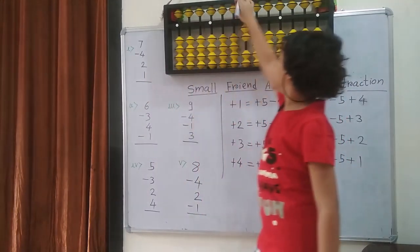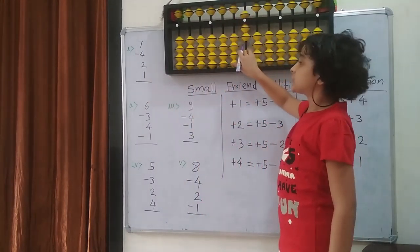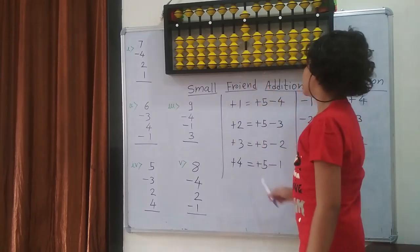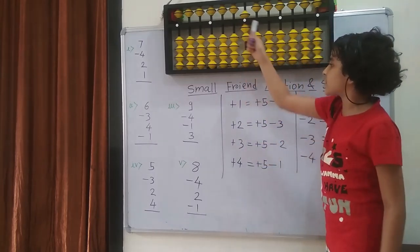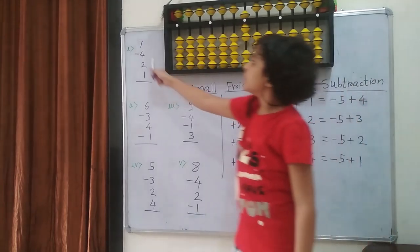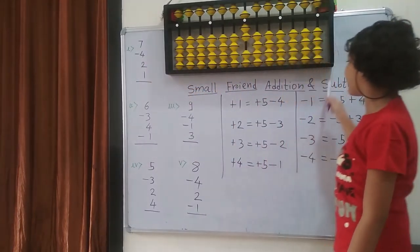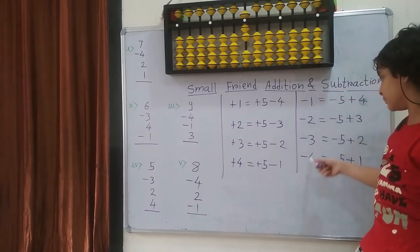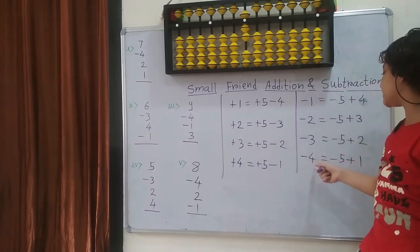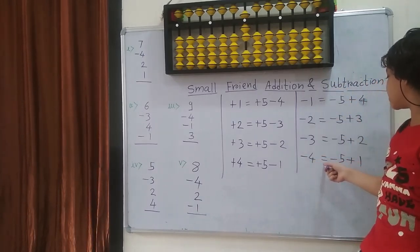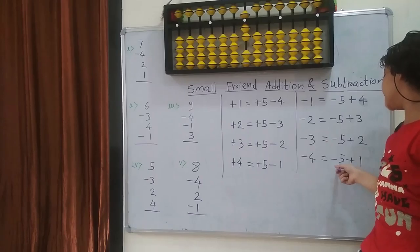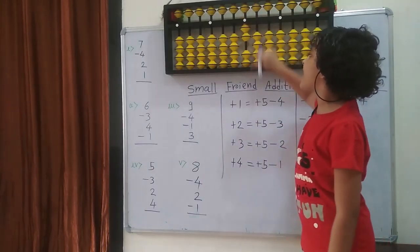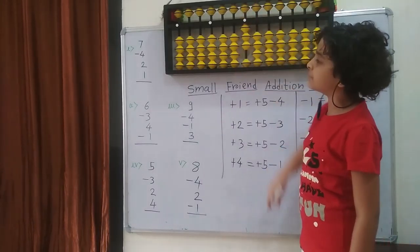Then I am going to minus 4. So I cannot, because I don't have enough bits. So I am going to use the formula — this is subtraction, so we are going to use the subtraction formula. Which is: minus 4 equals to minus the 5 plus the 1. So minus the 5 and plus the 1.